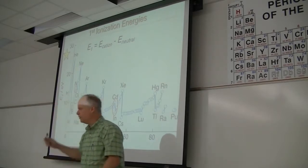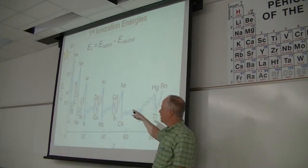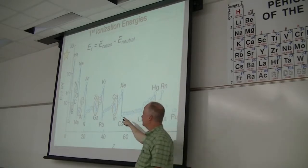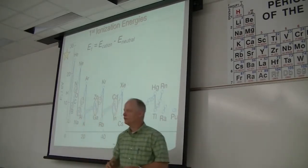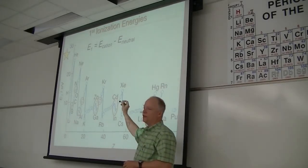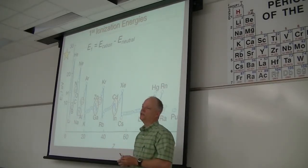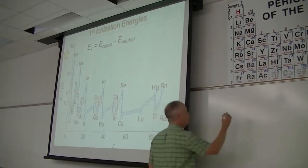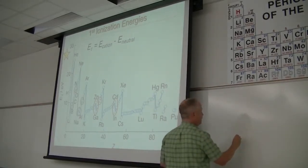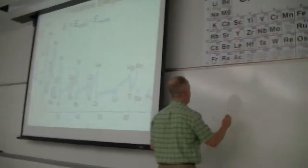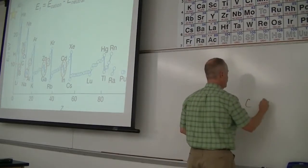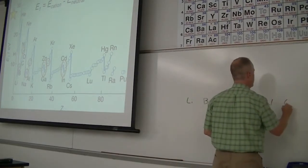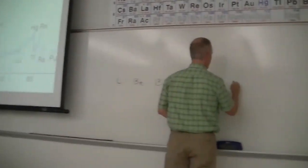Okay, so let's get started today. This was Friday's exercise — to understand all of these jumps in this graph of first ionization potentials. Let's make a simple plot here, starting with lithium, then beryllium, boron, carbon, oxygen, chlorine, and helium.